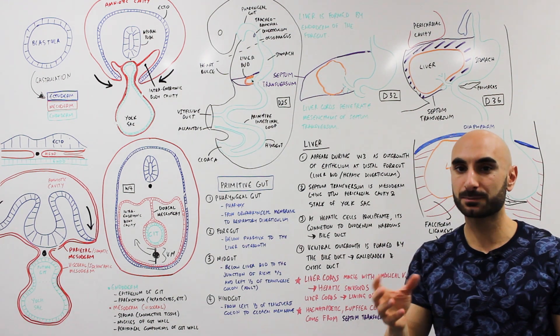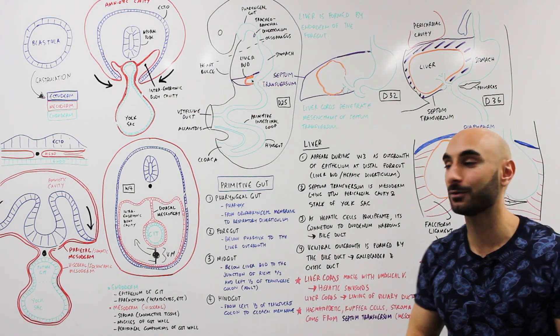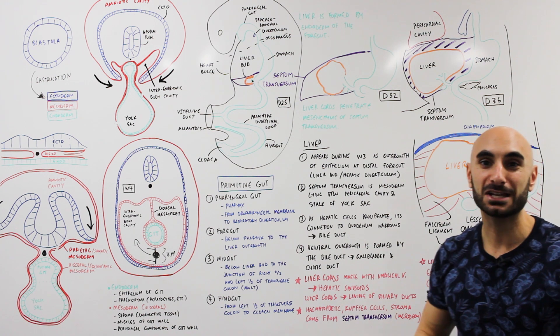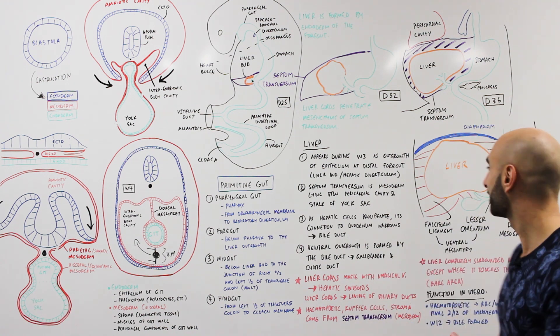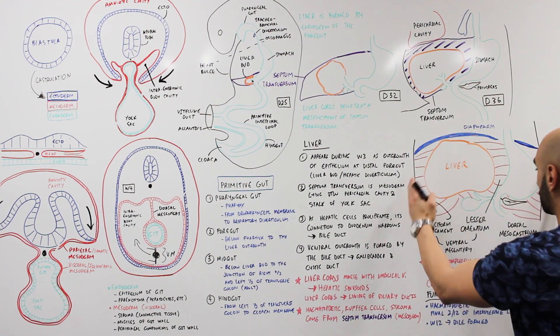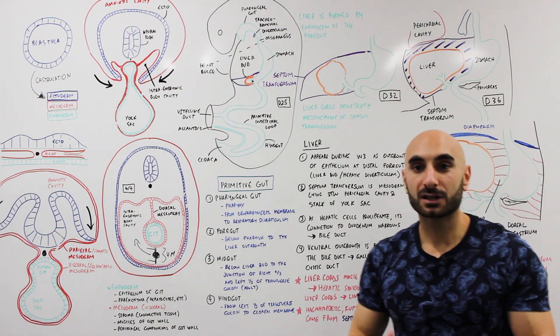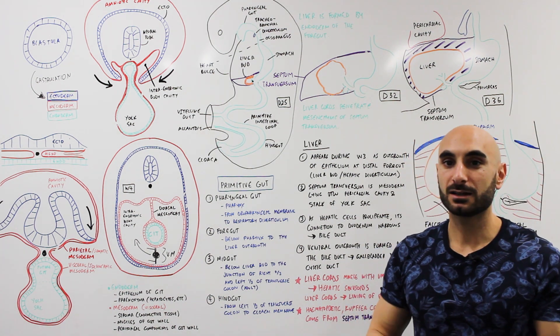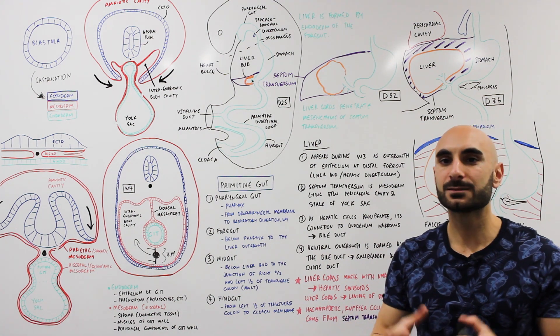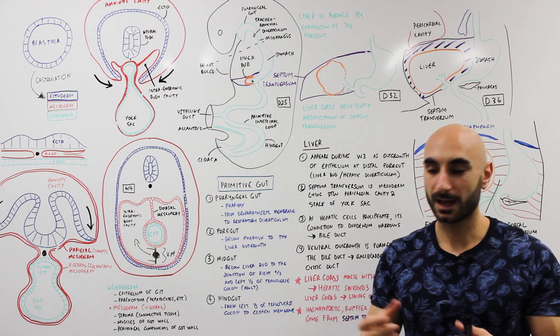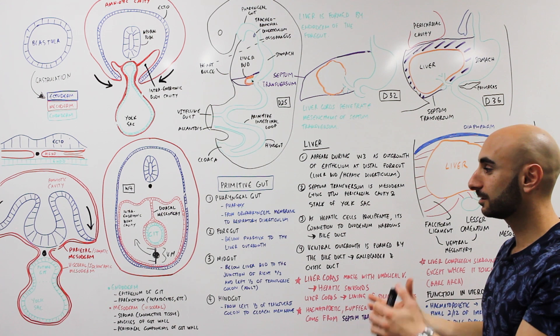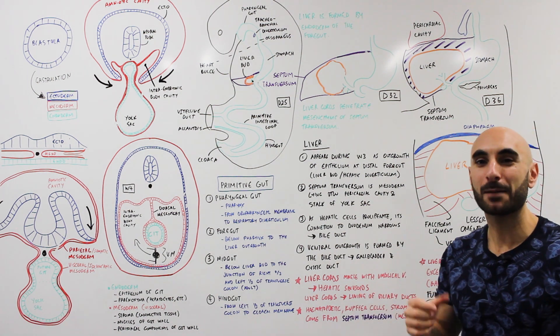The liver is essentially completely covered in peritoneum in all areas except where it is in contact with the diaphragm, and this part of the diaphragm is called the bare area (B-A-R-E). I've drawn this one in particular to outline the connective tissue that is surrounding the liver. It's important to know the mesentery and what connects the liver to what in the abdomen.